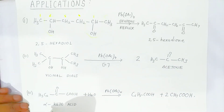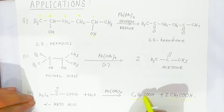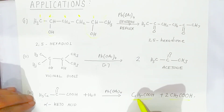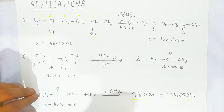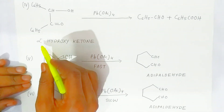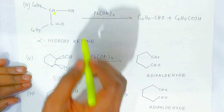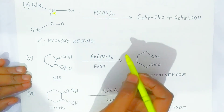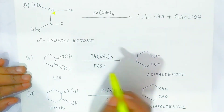Similarly, a ketoacid in the presence of lead tetraacetate is converted into benzoic acid and acetic acid — this is from an alpha-ketoacid. For alpha-hydroxyketone, where the hydroxyl group is at the alpha position, it is converted into benzoic acid and benzoic acid.